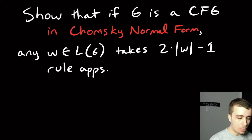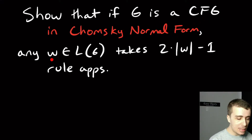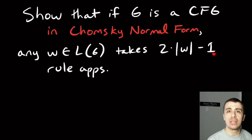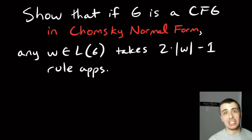I want to do a proof about this question: we have a context-free grammar in Chomsky normal form, and we want to show that any string in the language of that grammar takes exactly two times the length of w minus one rule applications to make that string. If you don't have a grammar in Chomsky normal form, you can't guarantee this, so it's nice that when it's in this form, you know exactly how many rules to apply.